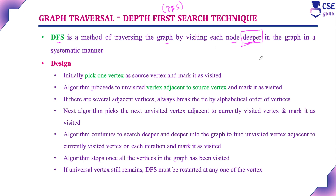Considering the design steps: for the given graph, initially we need to pick one vertex as the source or starting vertex and mark it as visited. I will consider A as the source vertex. The algorithm then proceeds to an unvisited vertex adjacent to the source vertex. Adjacent to A, we have B and D. If there are several adjacent vertices, we break the tie by alphabetical order, so B comes first.